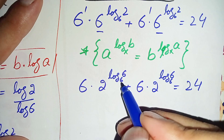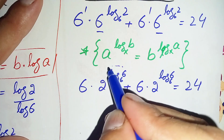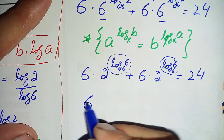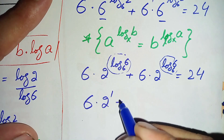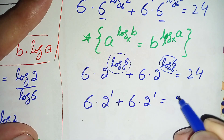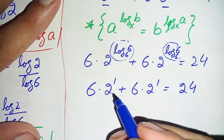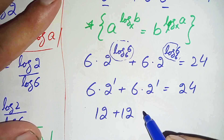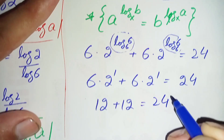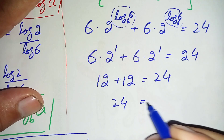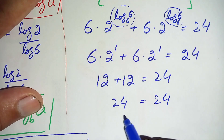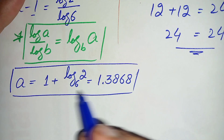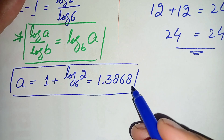We know that log of any number with the same base is always equal to 1, so log of 6 with base 6 equals 1. Replacing these with 1, this becomes 6 times 2 raised to power 1 plus 6 times 2 raised to power 1 equals 24. That gives us 12 plus 12 equals 24, which is true. Both sides are equal, confirming that a equals 1 plus log₆2, or approximately 1.3868, is the correct answer.